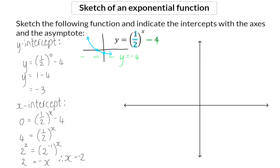So when I now go to draw this graph, I start off with my asymptote, which is at y is equal to minus 4. I know that this graph is decreasing with a negative x and negative y-intercept, and the x-intercept is minus 2, 0, and the y-intercept is 0, minus 3.